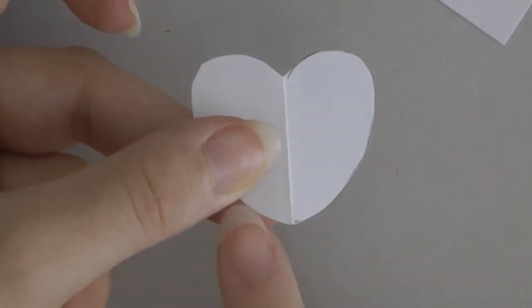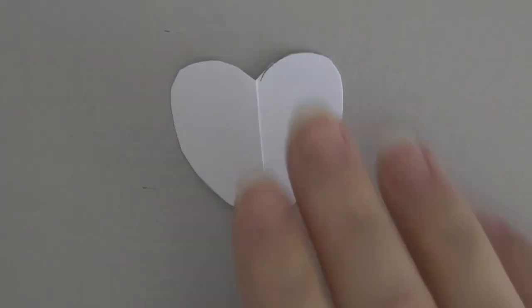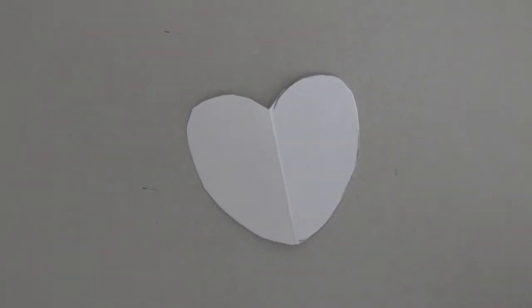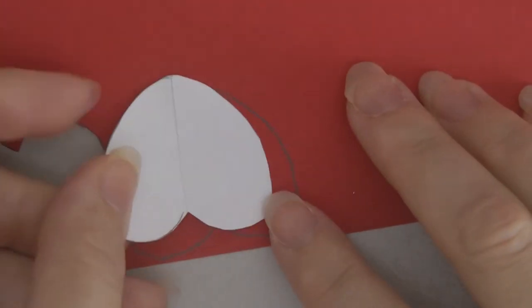Now if you'll notice, the bottom is not pointed. I have made it a little bit rounded. That is key so that it looks more like a strawberry and less like a heart. Now that I have this, it obviously has a crease down it and it is not red, so we will trace it onto some cardstock and cut around.